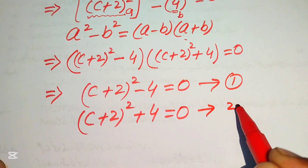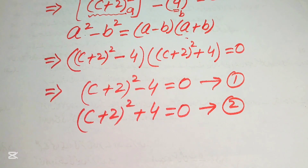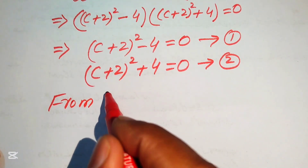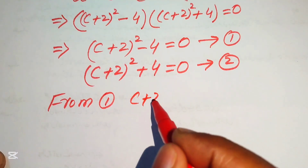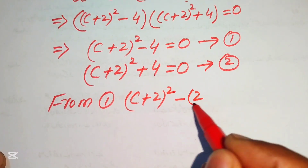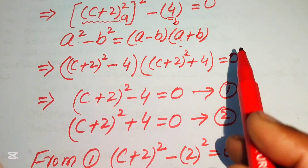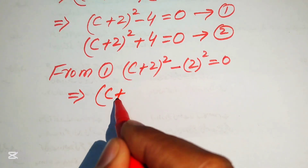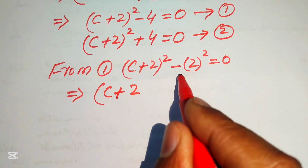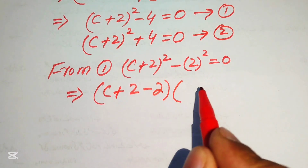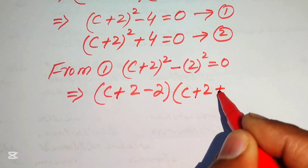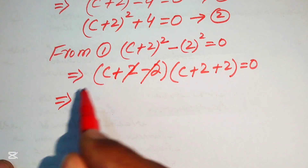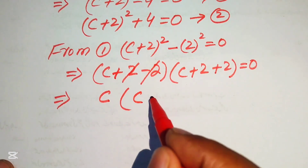To find all four roots, we solve both equations. Focusing on equation 1: (C + 2)² - 4 = 0. We write 4 as 2², so we have (C + 2)² - 2² = 0. Applying the difference of squares formula again with a = (C + 2) and b = 2, we get (C + 2 - 2)(C + 2 + 2) = 0, which simplifies to C(C + 4) = 0.